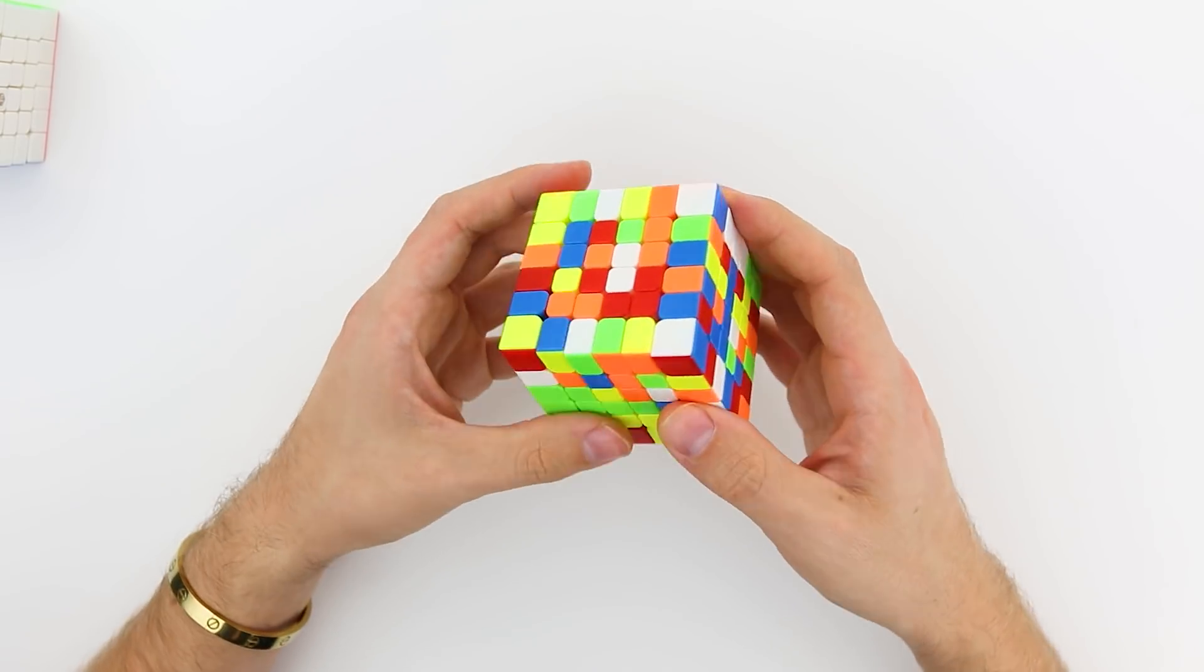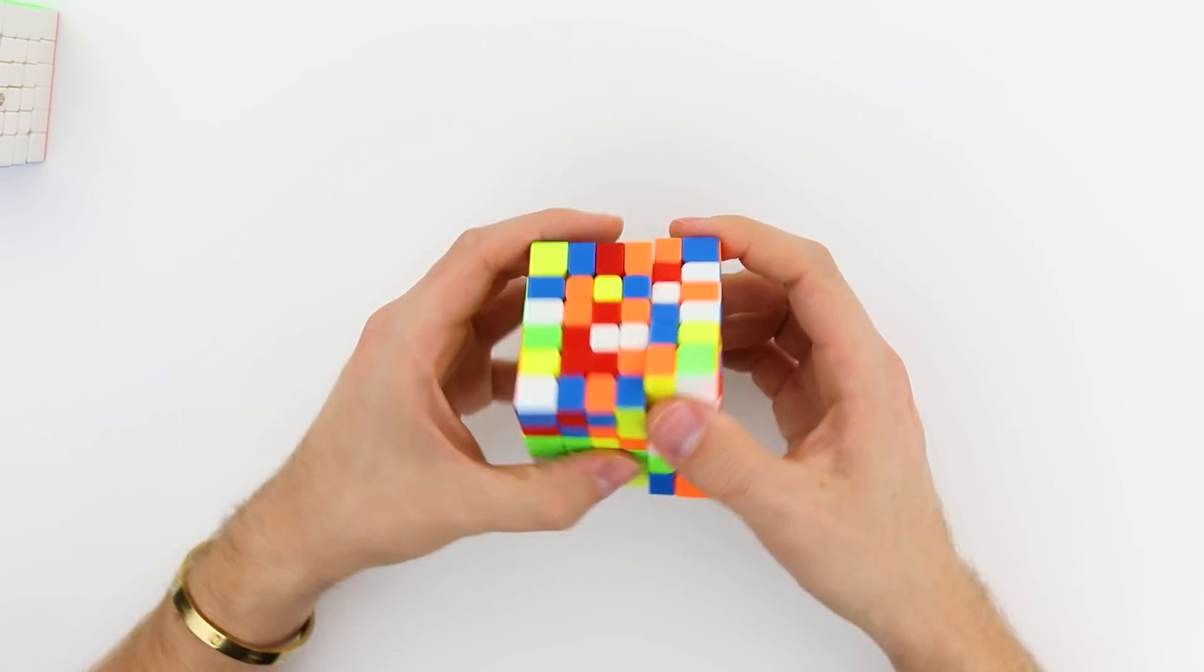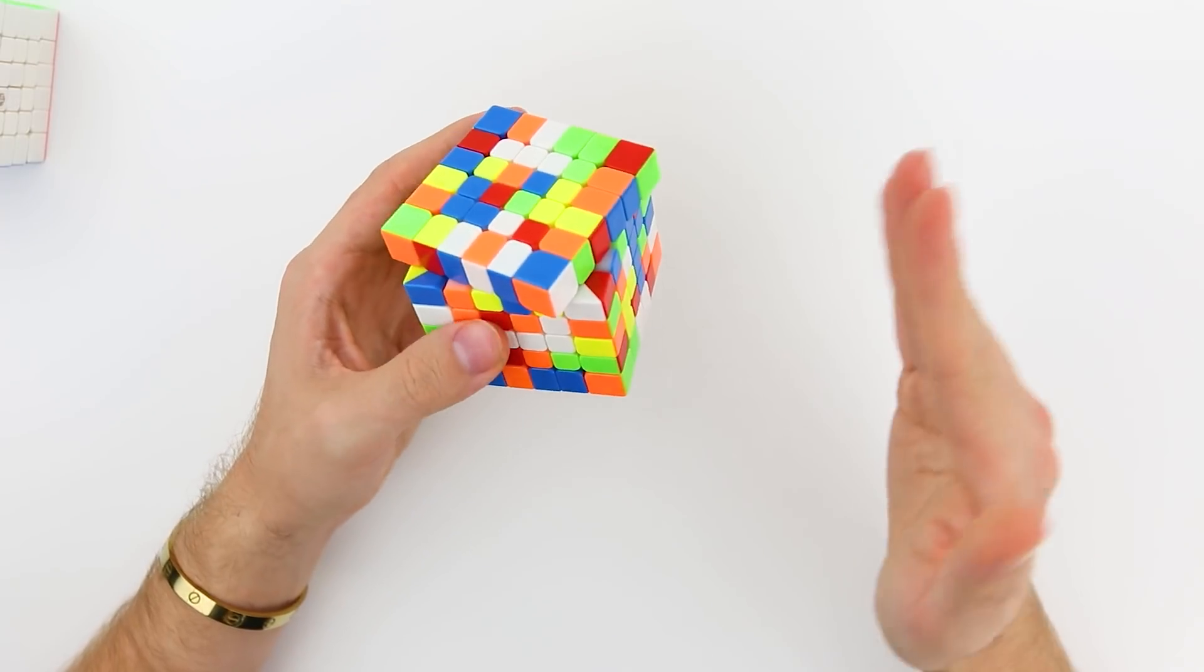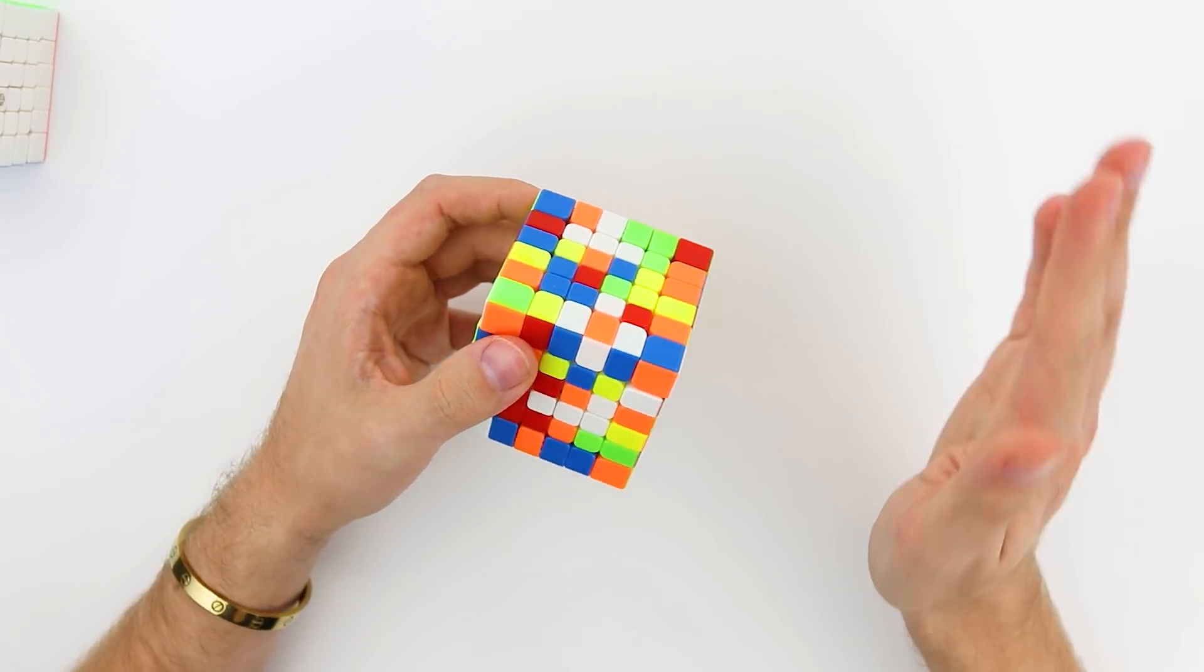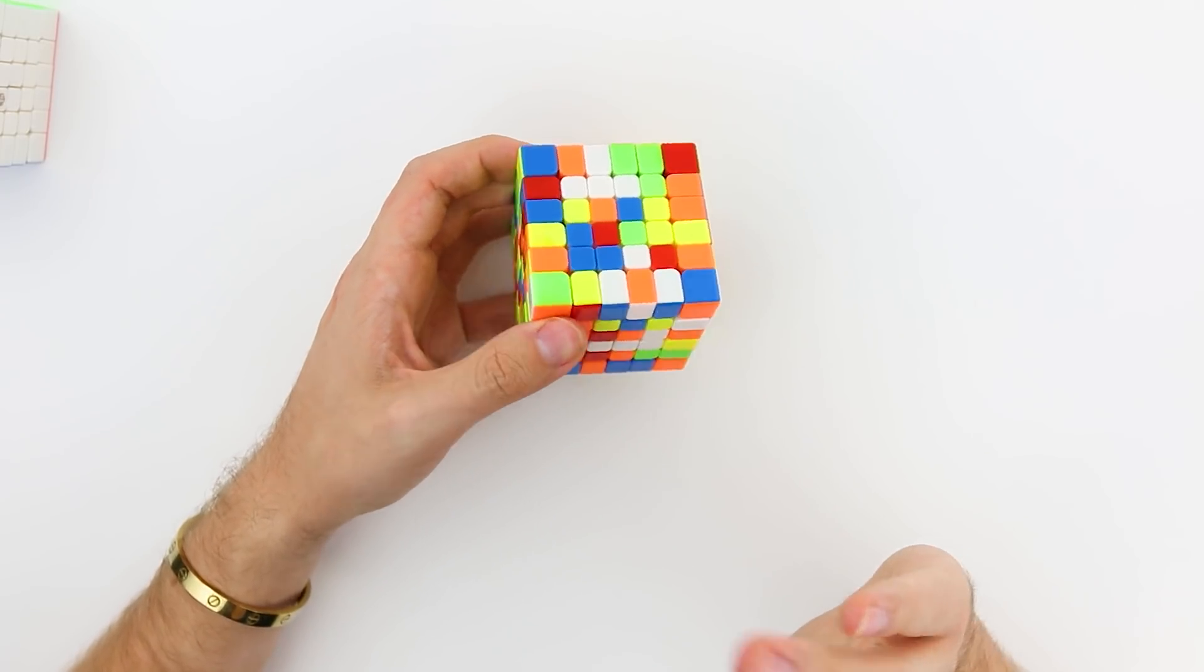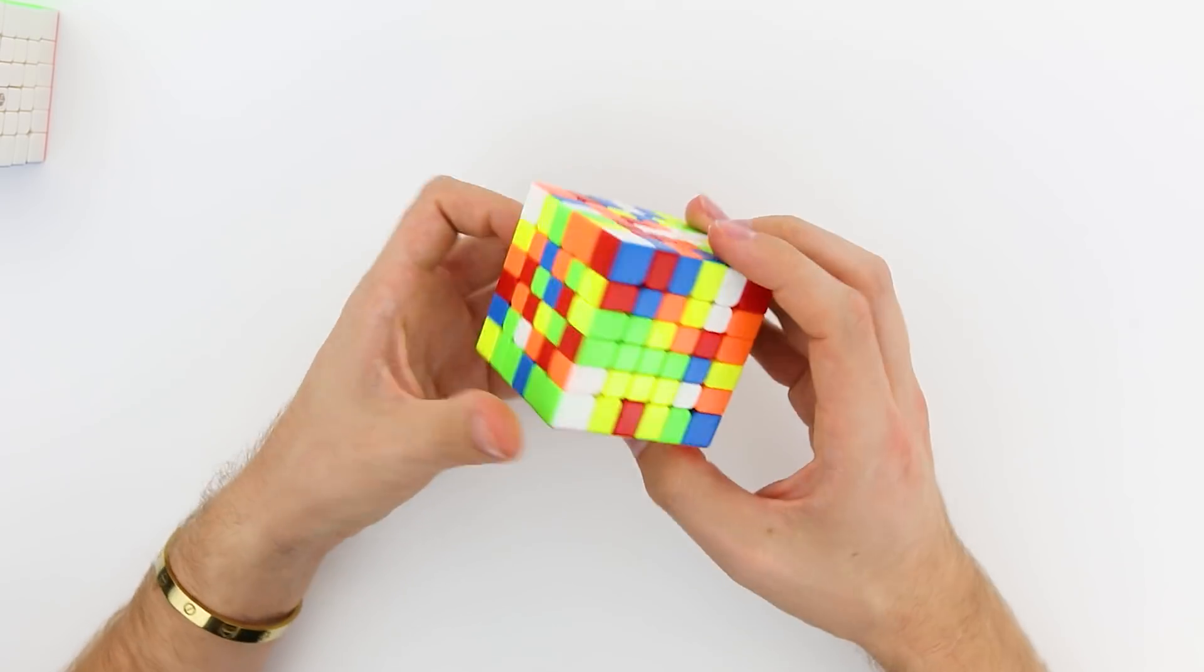I do know that some cubes, like the MGCs, have a specific sweet spot between being too tight and too loose, and you have to pretty much find the exact tension that is right in the middle ground between those two.